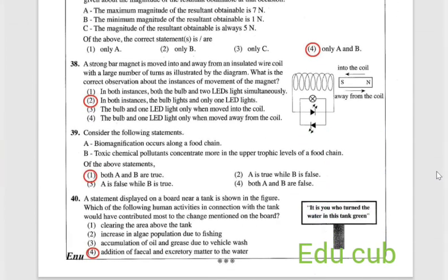Question 38: a strong bar magnet is moved into and away from a resultant wire coil with a large number of turns as illustrated by the diagram. What is the correct observation at the instance of movement of the magnet? The second answer is correct.